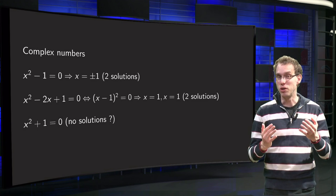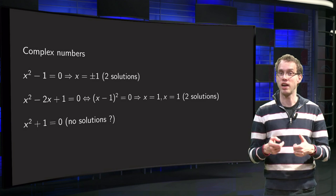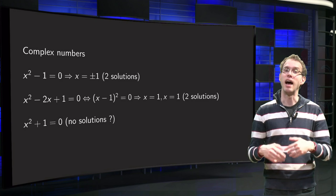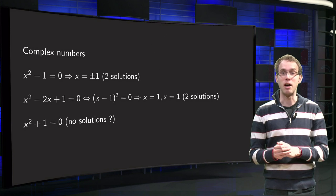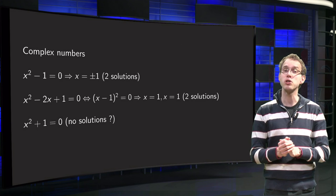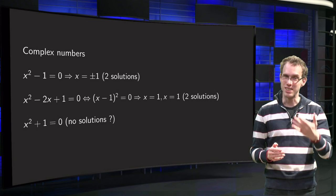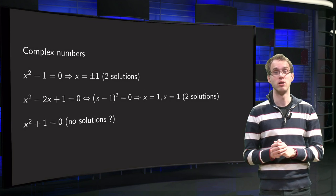However, we see that it is a so-called double zero. It occurs twice in the factorization, so solutions are x equals 1 and x equals 1. And in such a case, mathematicians count the one double, so we say this equation also has two solutions, x equals 1 and x equals 1. So the second quadratic equation also has two solutions.